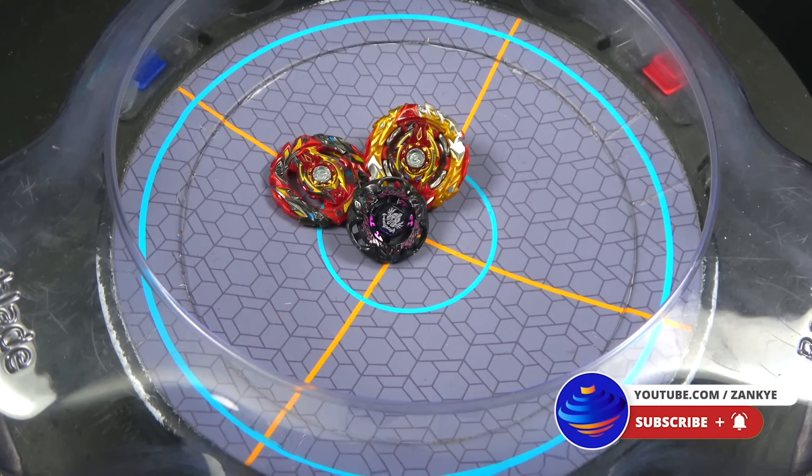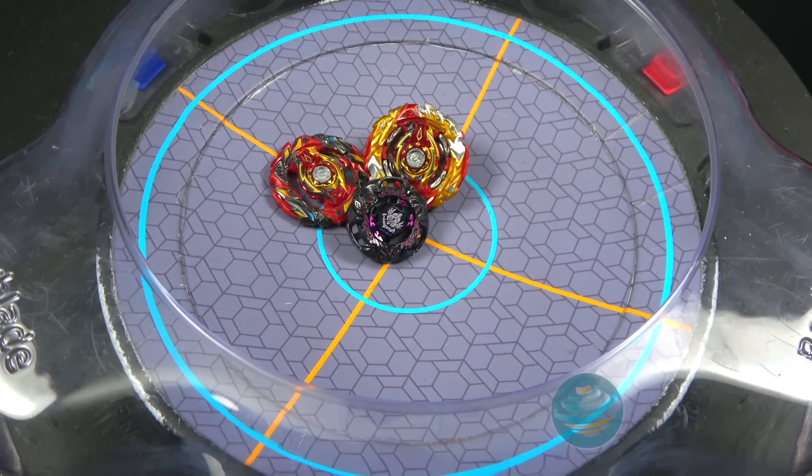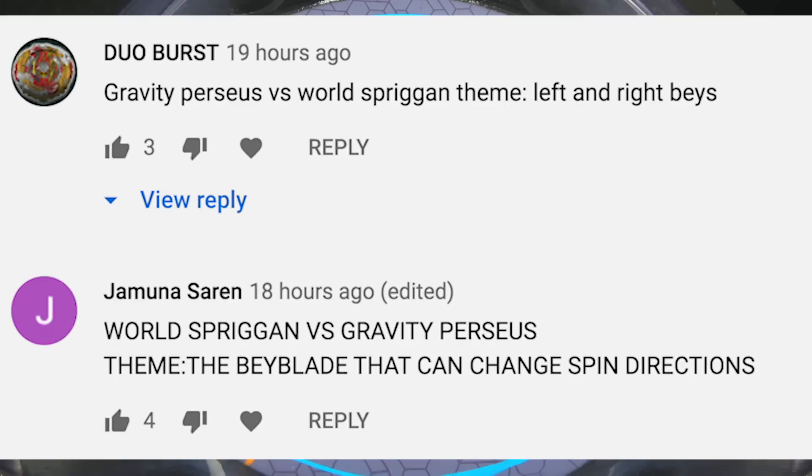Hello everyone! We have got a very fun battle. We have got World Spriggan versus Gravity Perseus. Where the localization was Destroyer and I still hate that.